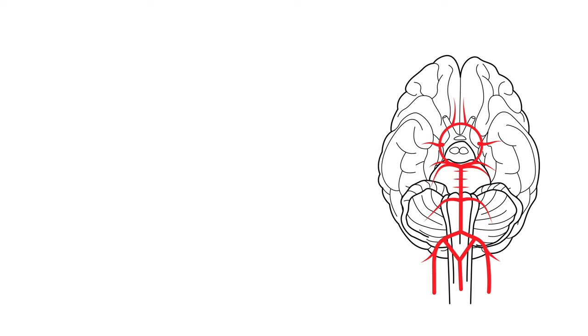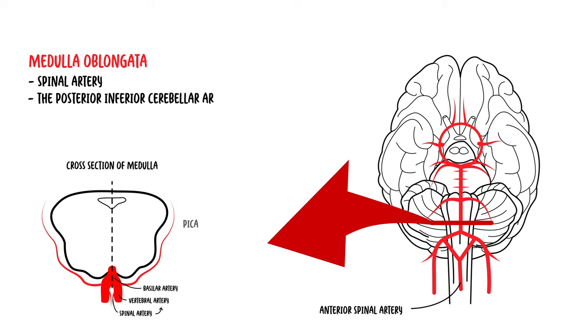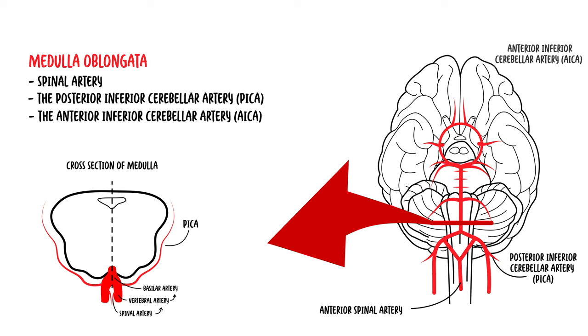The vascular supply of the medulla is complex, and it depends on the level being viewed. In general, the vessels that supply the medulla are the spinal artery, the posterior inferior cerebellar artery, the anterior inferior cerebellar artery, and the vertebral arteries.